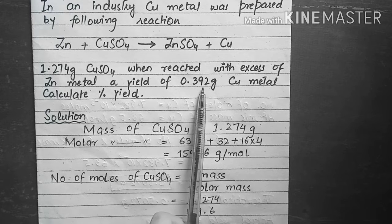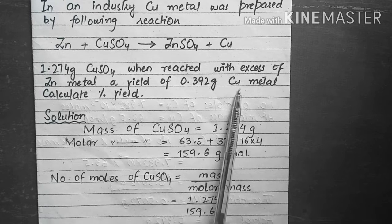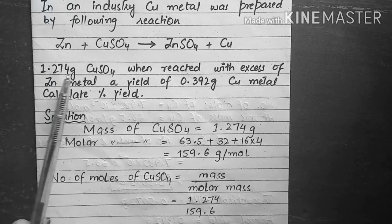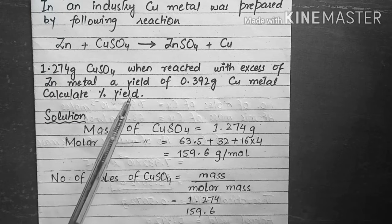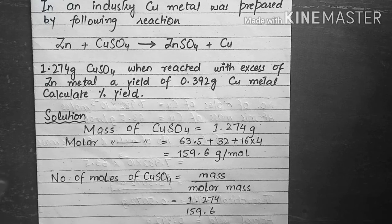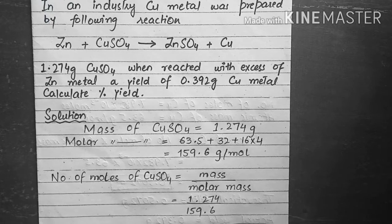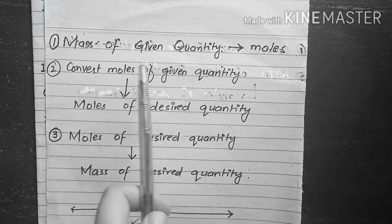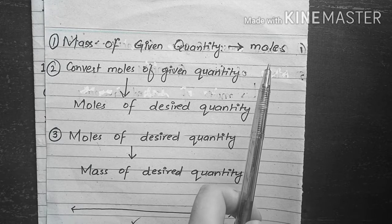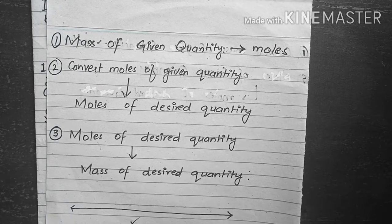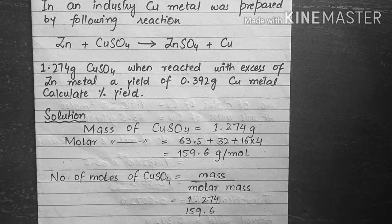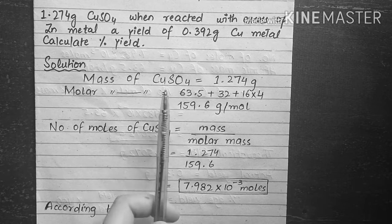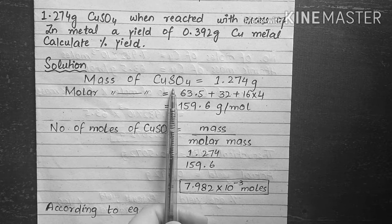We are given the actual yield, which is 0.392 grams of copper metal, and we are given the mass of copper sulfate. From the mass of copper sulfate, we have to calculate the percentage yield. In the first step, we are going to convert the mass of the given quantity into the moles of the given quantity — in this case, the mass of copper sulfate.